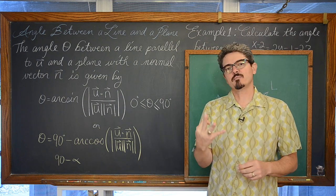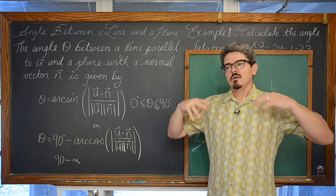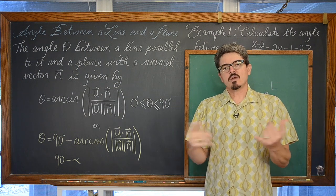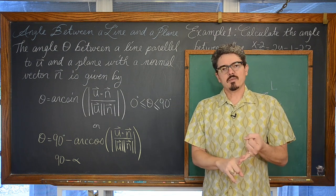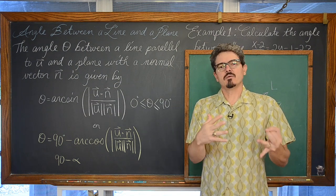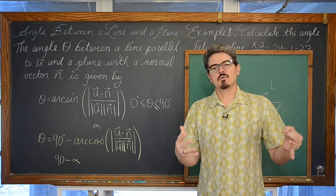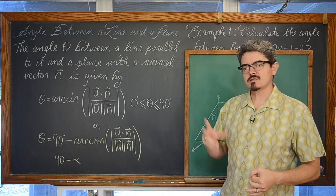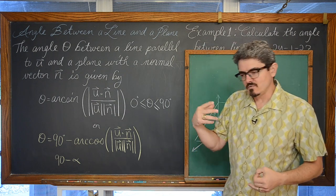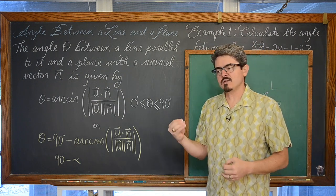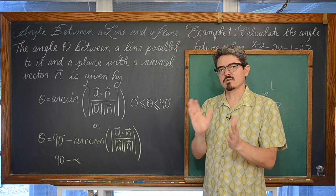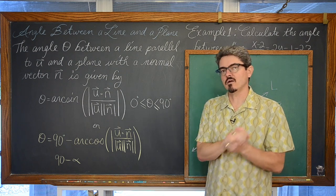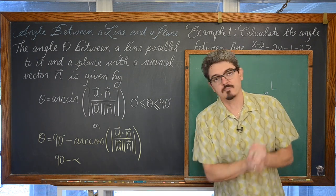In our third example, we'll be given an equation of a line and a plane with unknown constants as coefficients, and we'll solve for that unknown constant such that the line and the plane are parallel.